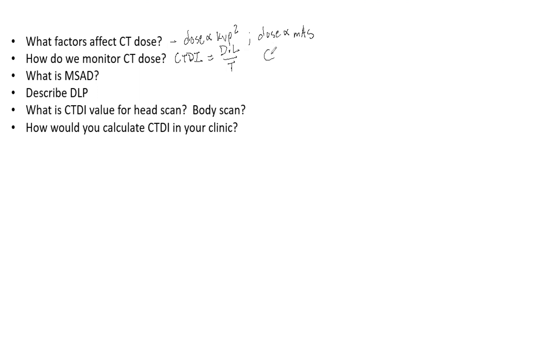So we also have CTDI weighted. That's what this W stands for. And that is one third the CTDI of the center, and that is added to two thirds CTDI of the periphery.